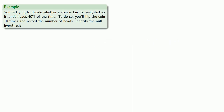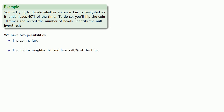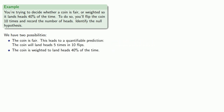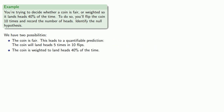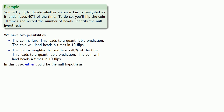An important idea for what's known as Bayesian statistics: suppose you're trying to decide whether a coin is fair or weighted so it lands heads 40% of the time. You'll flip the coin 10 times and record the number of heads. Identify the null hypothesis. We have two possibilities: the coin is fair, or the coin is weighted to land heads 40% of the time. The first hypothesis leads to a quantifiable prediction — the coin will land heads 5 times in 10 flips. What's important about this example is that the other hypothesis also leads to a quantifiable prediction: if the coin is weighted to land heads 40% of the time, the coin will land heads 4 times in 10 flips. Both hypotheses lead to quantifiable predictions, which means either could be the null hypothesis.